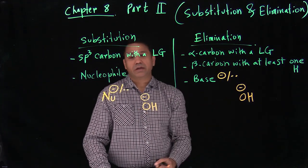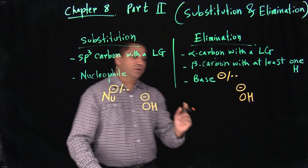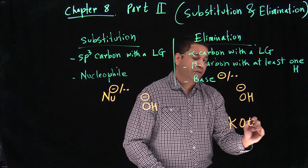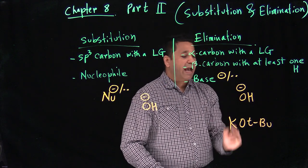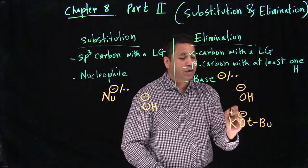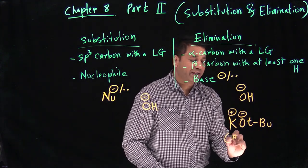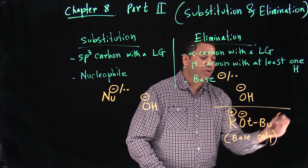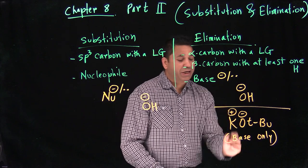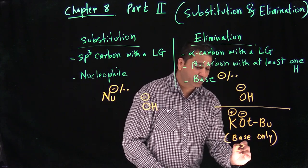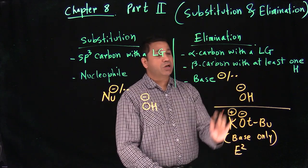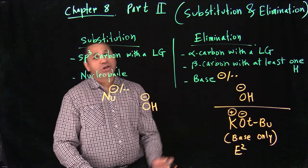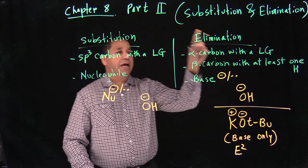There is an exception: when we talked about the bulky base, potassium tert-butoxide — that is base only. So this cannot be a nucleophile, which means it can only do E2 elimination. It cannot do substitution. Other than that, all the other bases should be able to do substitution and elimination at the same time.